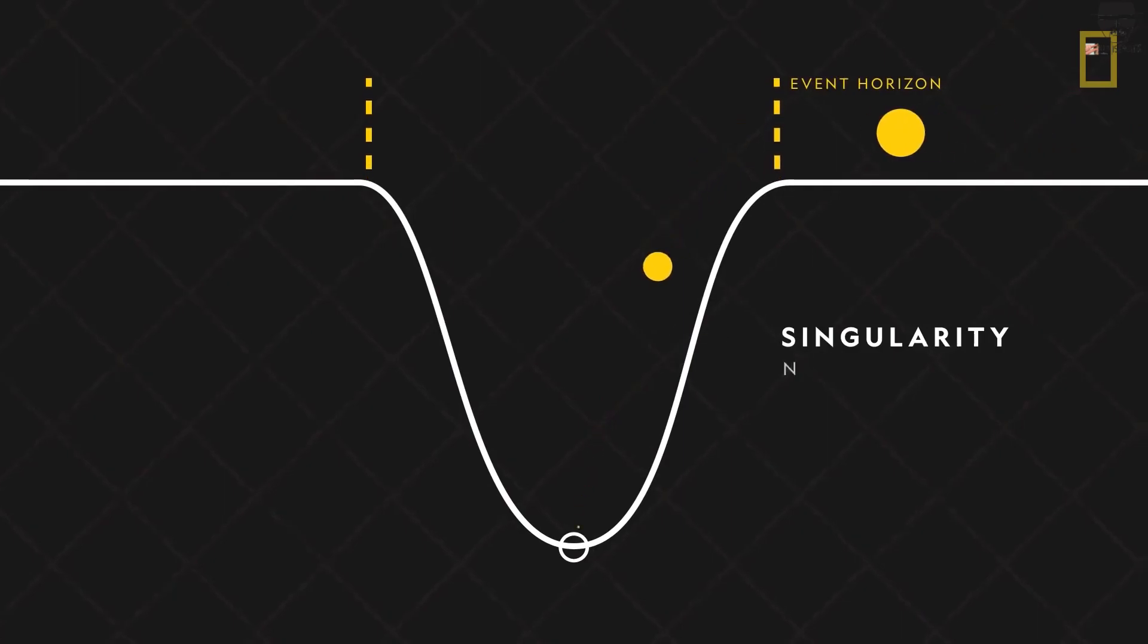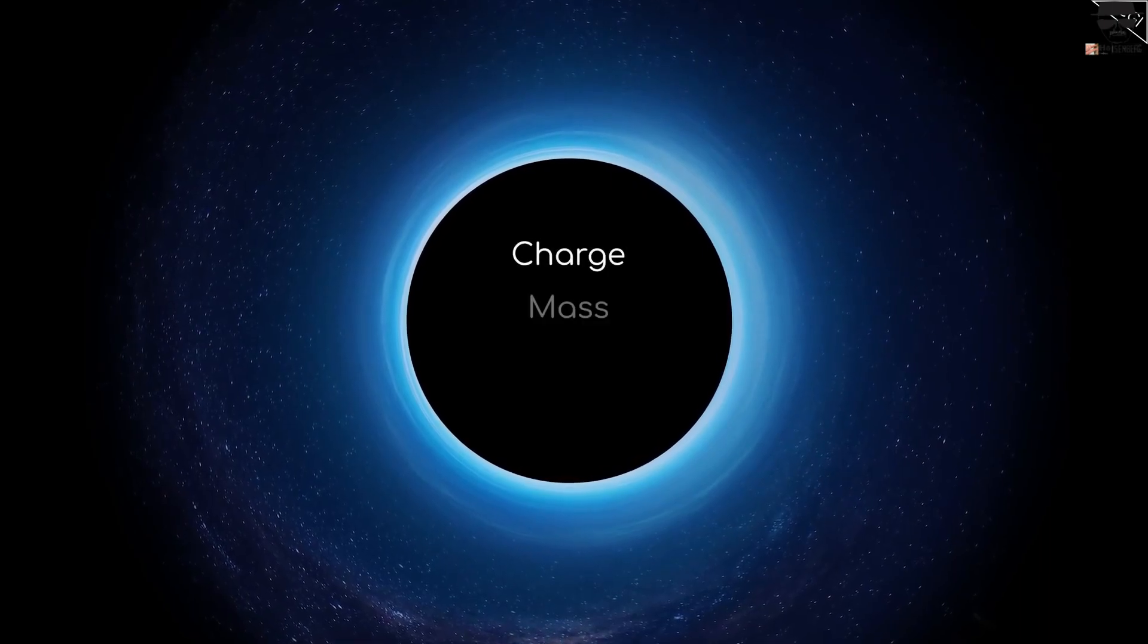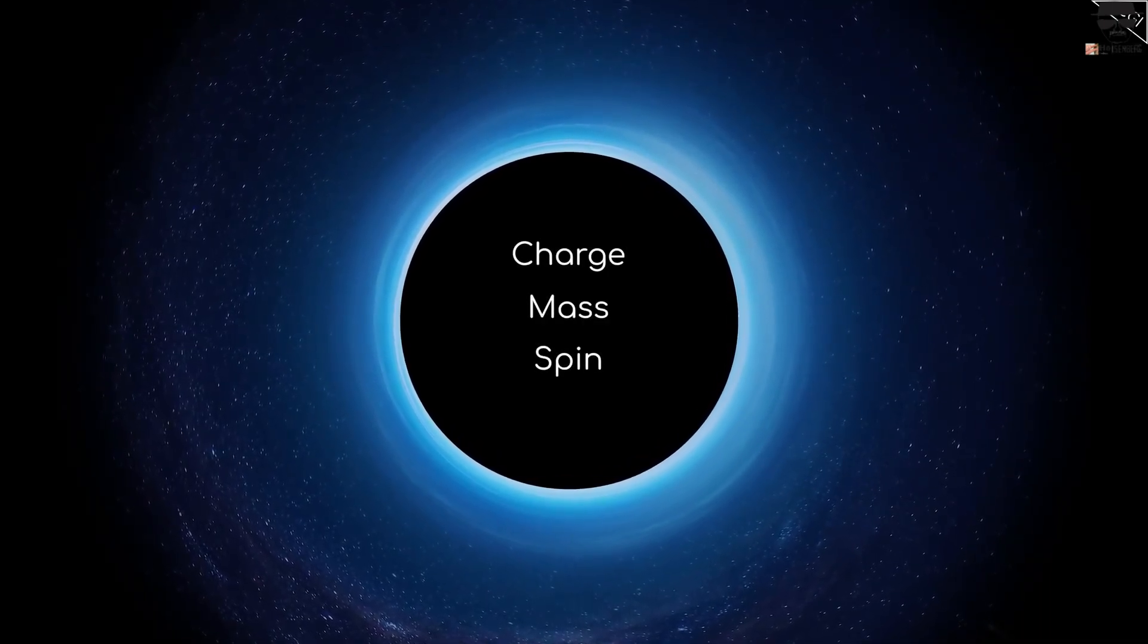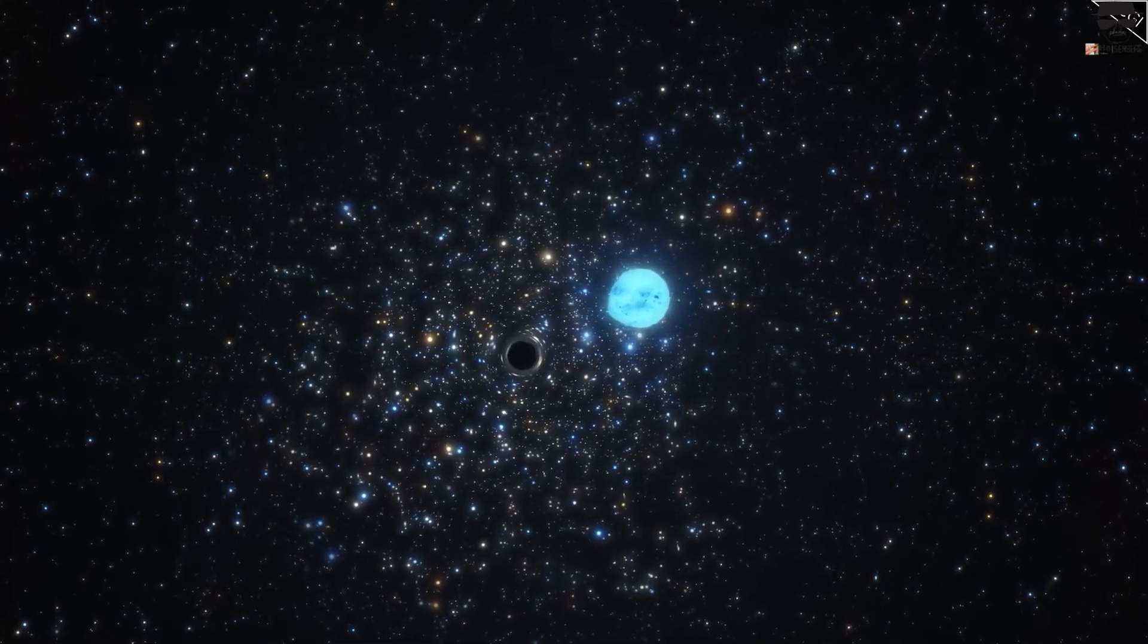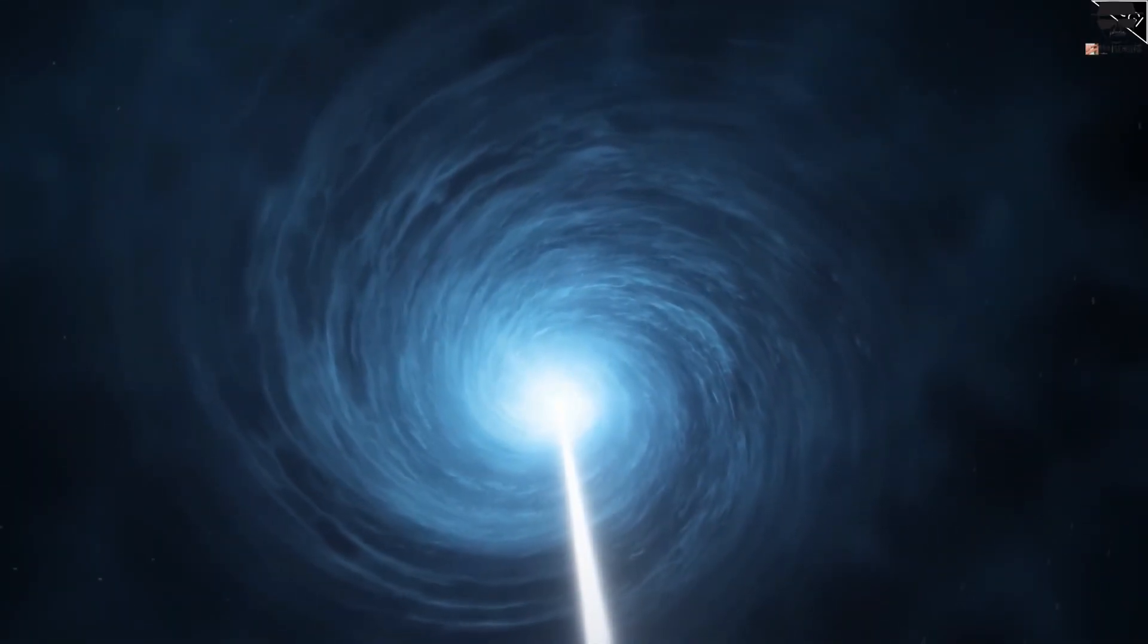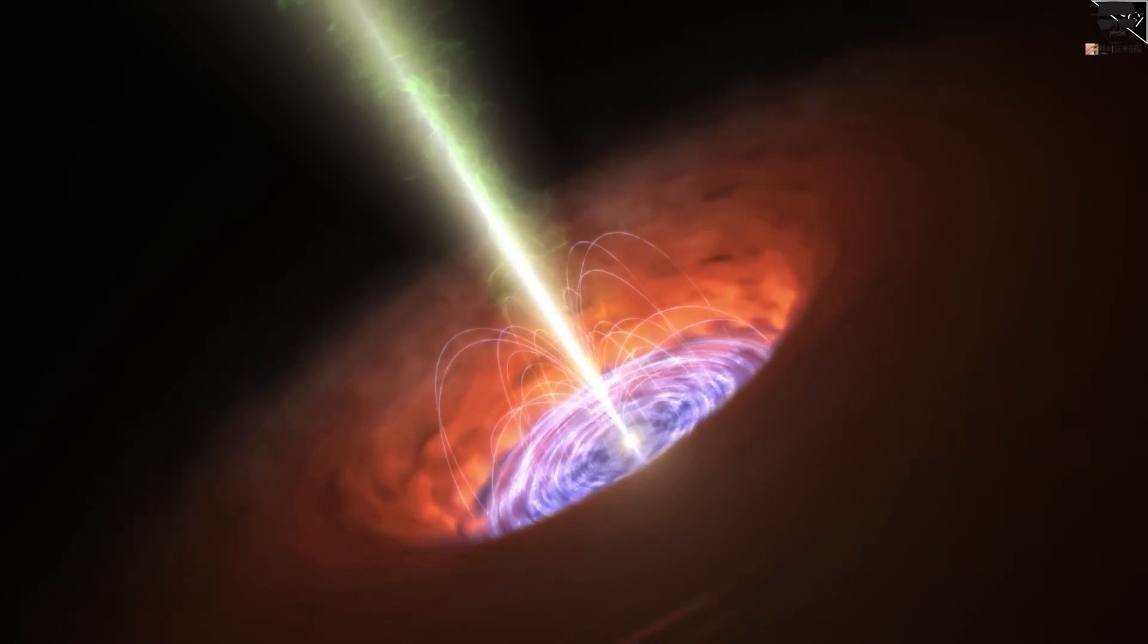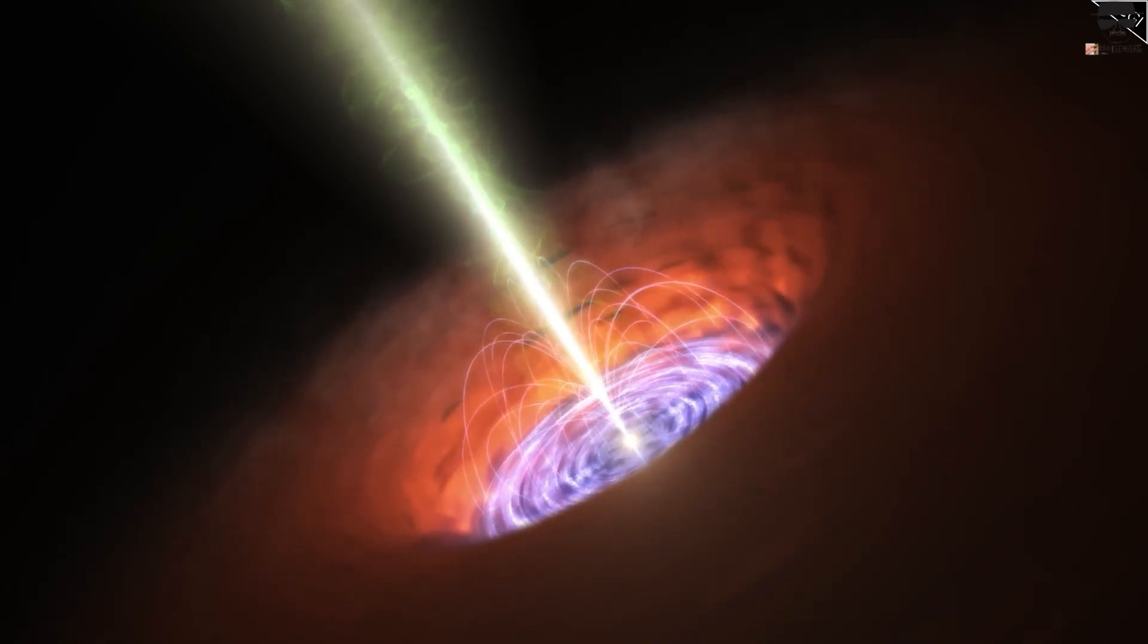This happens even if the black hole isn't a stationary point mass but has either electric charge and/or spin and angular momentum to it. The specifics of the problem change, and in the case of rotation, the central singularity might be smeared out into a one-dimensional ring instead of a zero-dimensional point, but there's no way to hold it up. Collapse down to a singularity is inevitable.